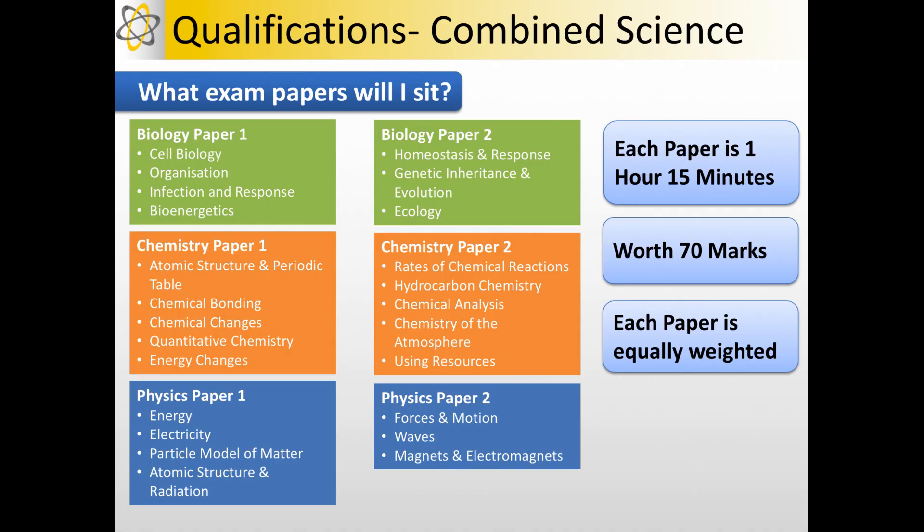Once you've sat all six papers the total score from each paper is added up to give you a whole score for all six of the exams together for your Combined Science qualification and from that total they are going to calculate the two grades that you will be awarded.